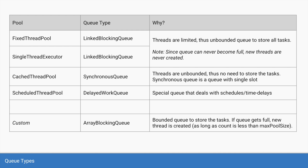For a cached thread pool, there is no traditional queue — instead there is a data structure called synchronous queue. Since the number of threads are unbounded, you can have virtually unlimited threads, so you do not need a storage area. The synchronous queue is sort of a queue with only a single storage slot, so any time a task is submitted, the thread pool will immediately empty that slot and create a new thread.